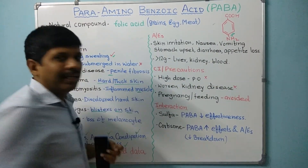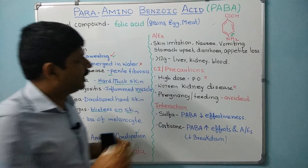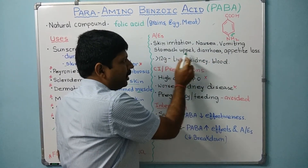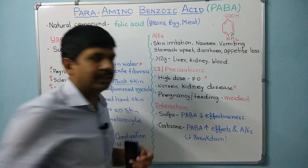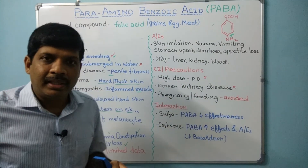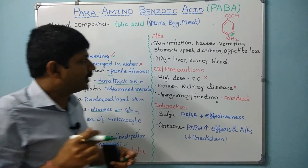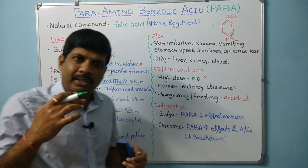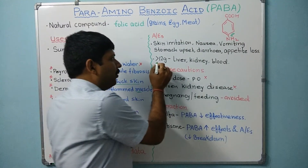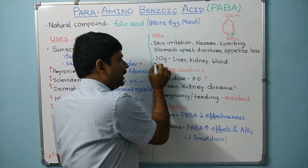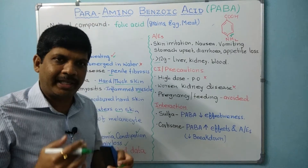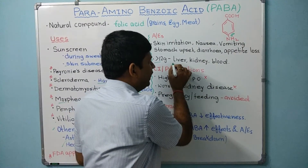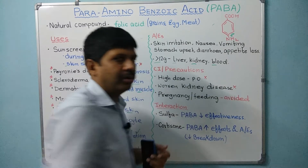Regarding adverse effects, mild effects include skin irritation, nausea, vomiting, stomach upset, diarrhea, and decreased appetite. In a few cases, if more than 12 grams of para-aminobenzoic acid is taken orally, it may produce liver, kidney, and blood-related disorders.